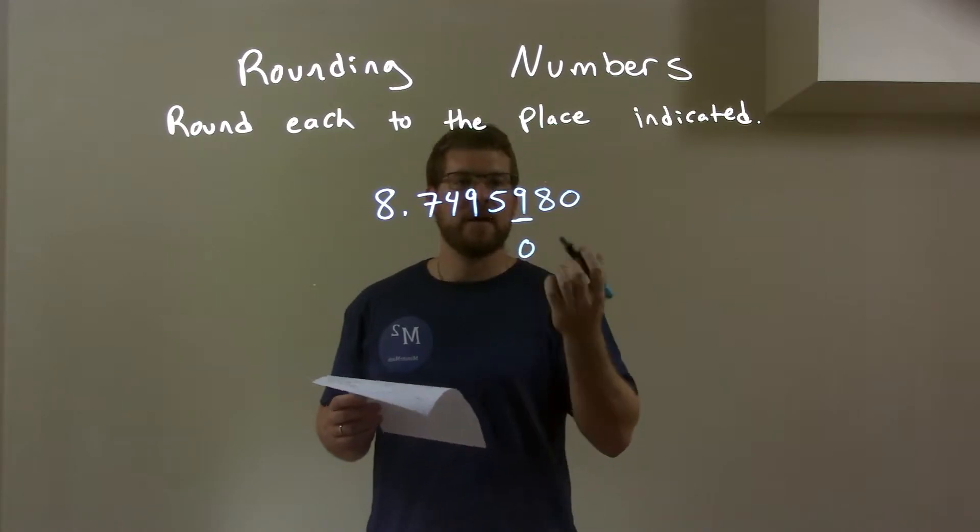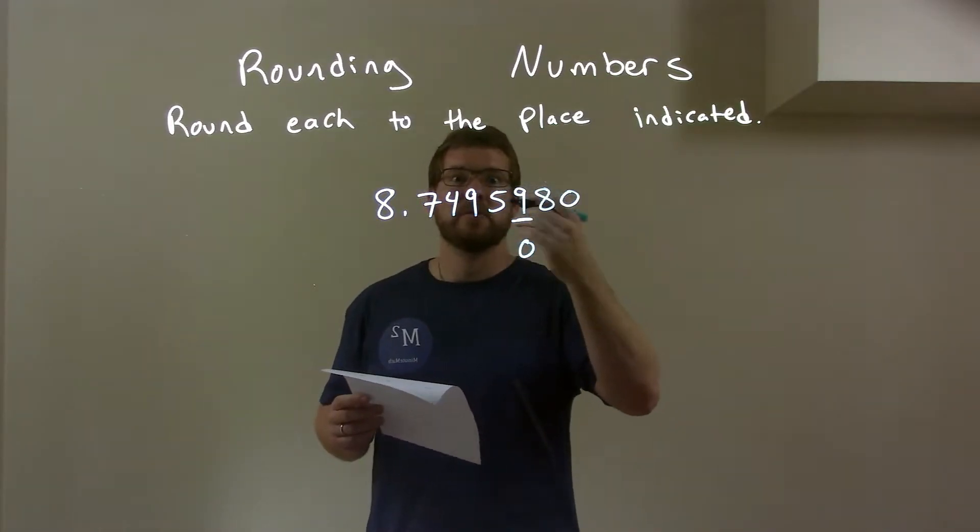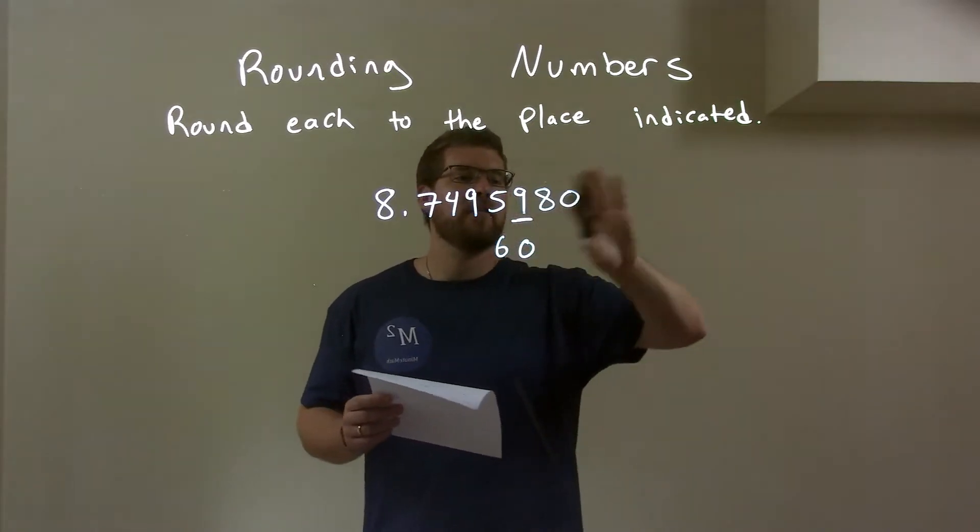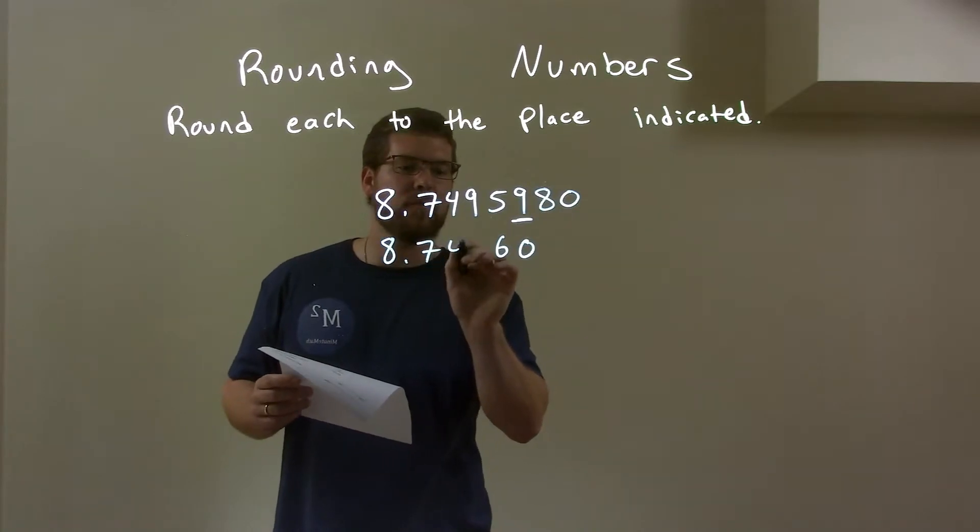Well, I put the 0 down here but I have to do something with that 1. The 1 causes the 5 to round up to a 6. That's what happens, okay? We leave off the 8 and 0 on the right. Bring down everything on the left. 8.749.